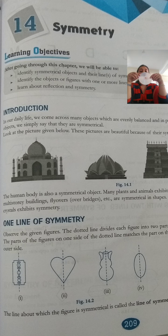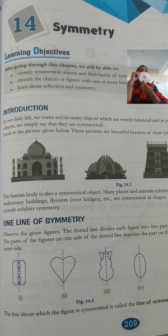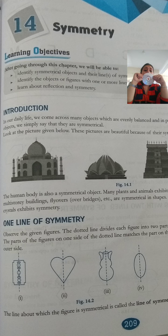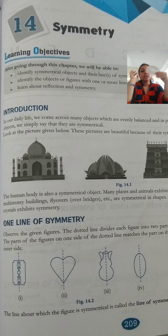See this - it's a CD. In a CD, wherever you cut it, you will get equal parts. You can cut it from any direction and you will get equal parts. So in a circle there are n number of lines of symmetry - wherever you cut it you get equal parts.